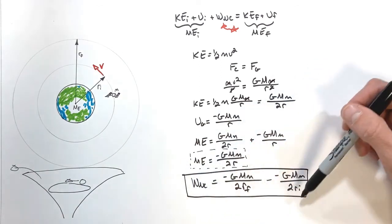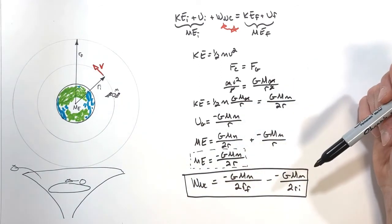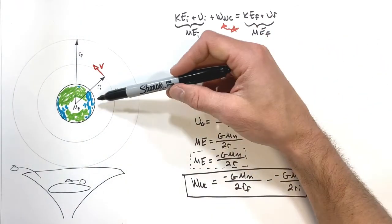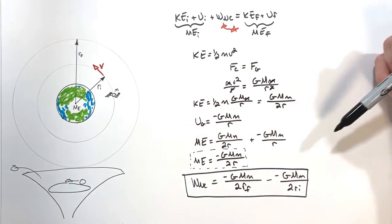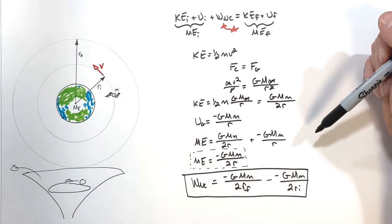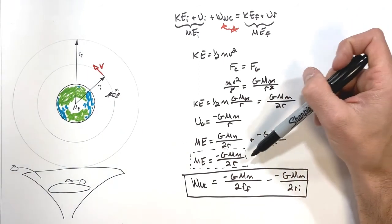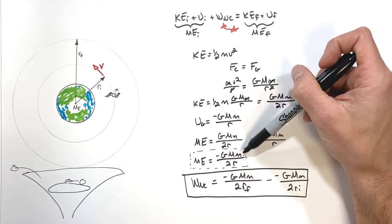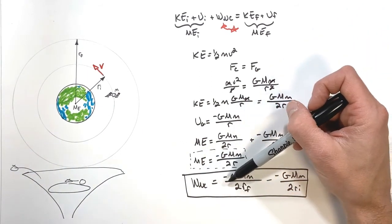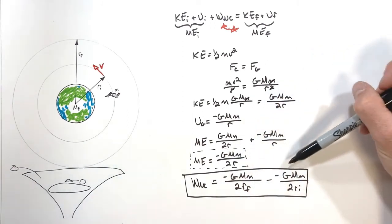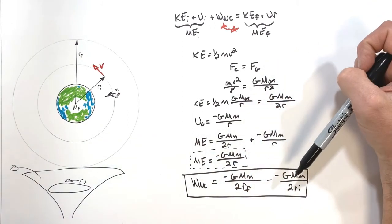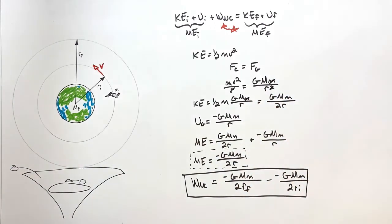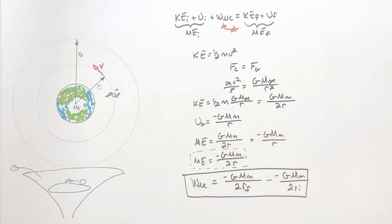We've now solved for the mechanical energy of an object in orbit, as well as the work required to change the orbit of a satellite. And on that note, that's all for now.